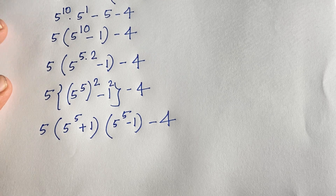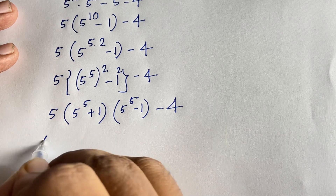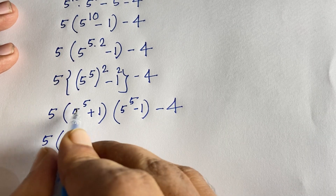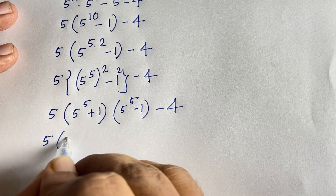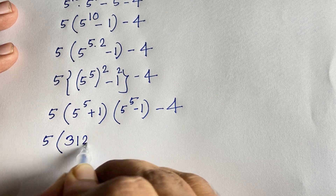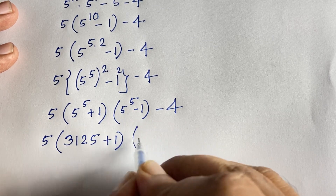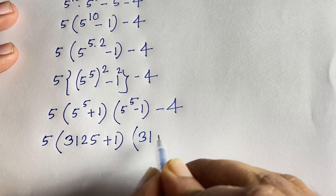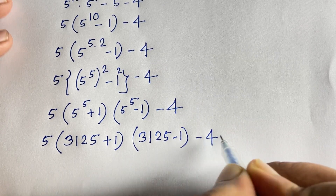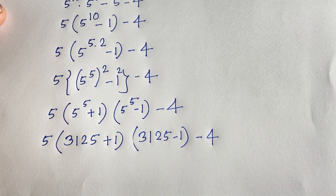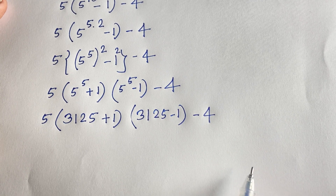At this moment, I can see that 5 to the power 5 equals 5 times 5 times 5 times 5 times 5, which is 3125. So we have 5 times (3125 plus 1) times (3125 minus 1) minus 4, which gives 5 times 3126 times 3124 minus 4.